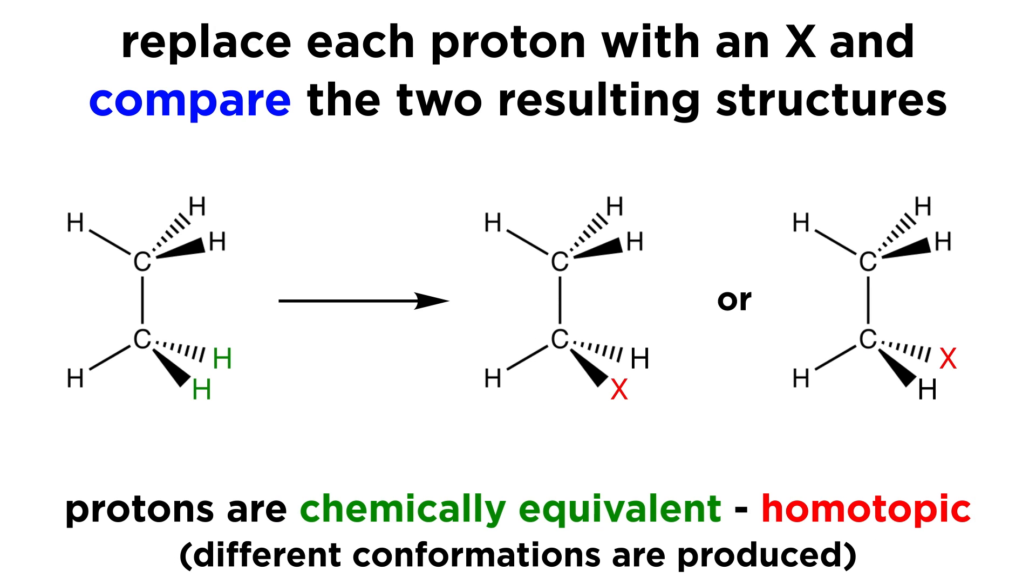Now let's say that the two compounds are identical and are simply different conformations of one another. This would mean that the protons were homotopic. They will be chemically equivalent.